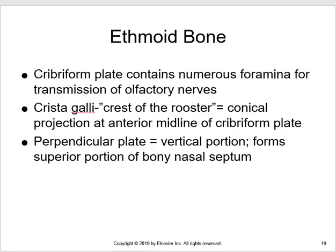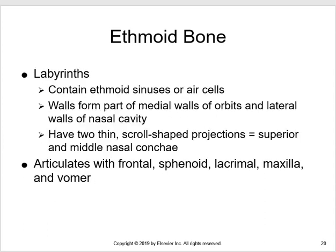In the cribriform plate, there are many holes where the olfactory nerves pass through. The crista galli — meaning 'crest of the rooster' — is the pointy portion that sticks up through the horizontal portion of the frontal bone. The perpendicular plate is the vertical portion, continuous with the bony nasal septum. The labyrinths contain ethmoid air cells; their walls form part of the medial walls of the orbits and the lateral walls of the nasal cavity.